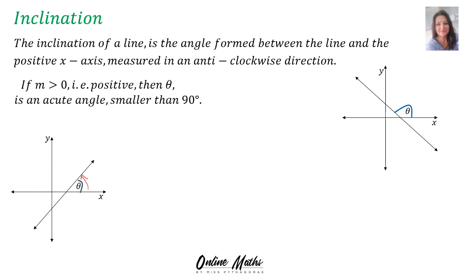If your gradient is greater than zero — in other words positive — then theta is an acute angle, smaller than 90 degrees.